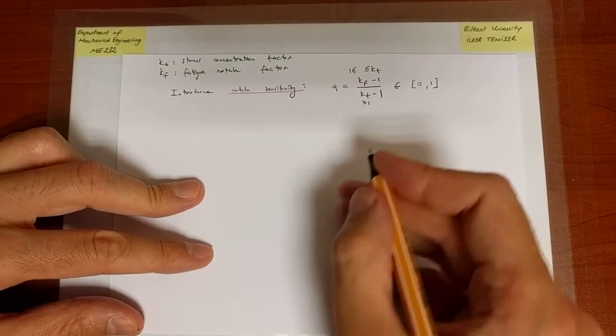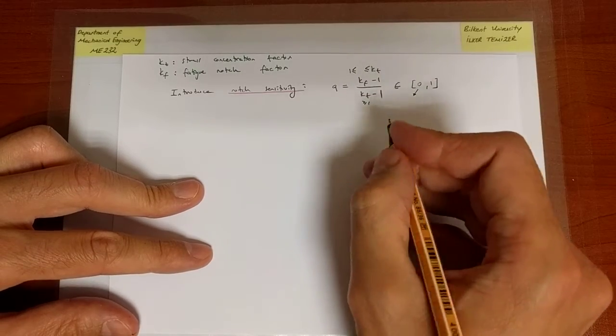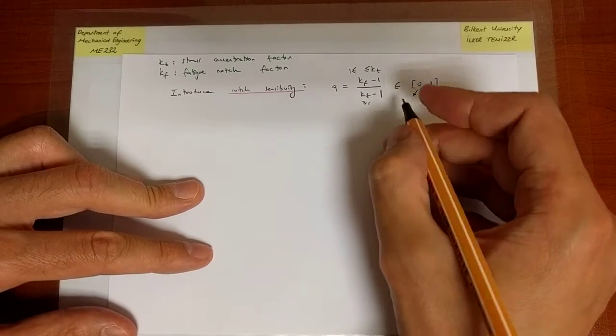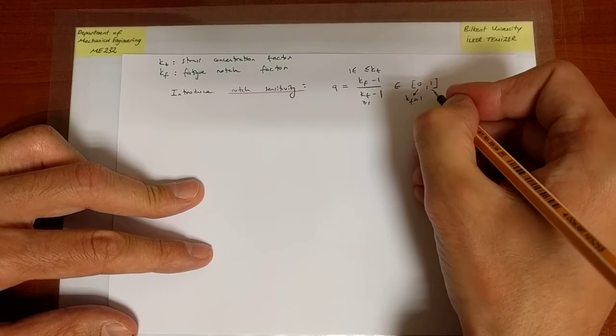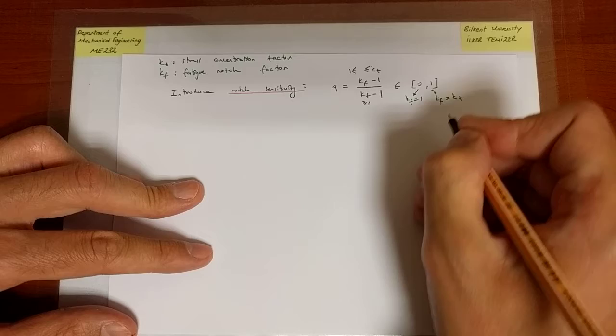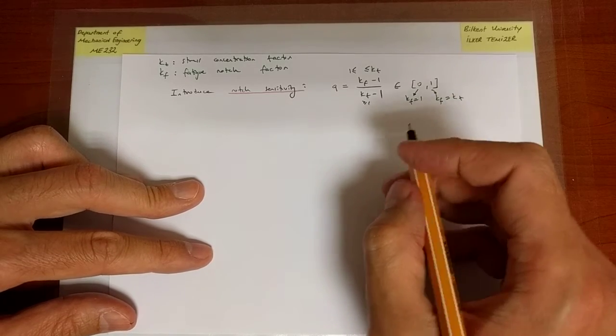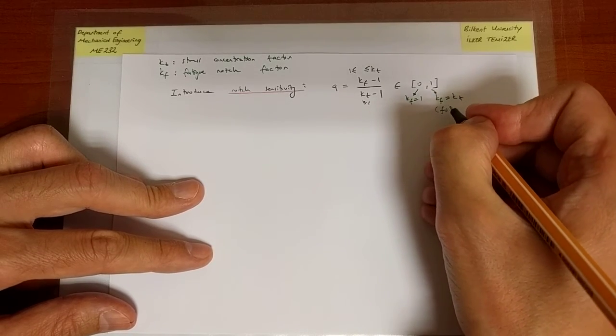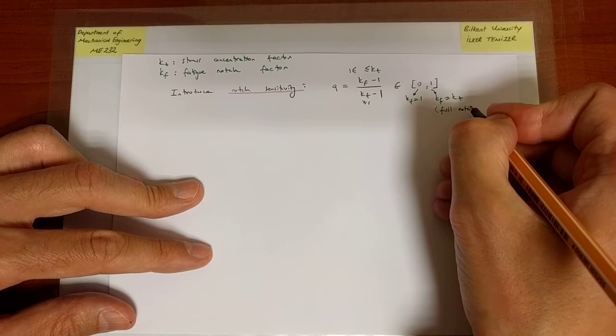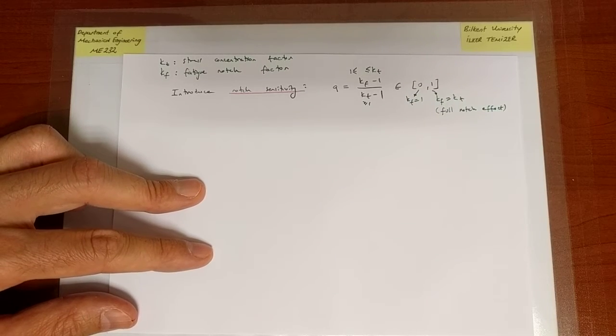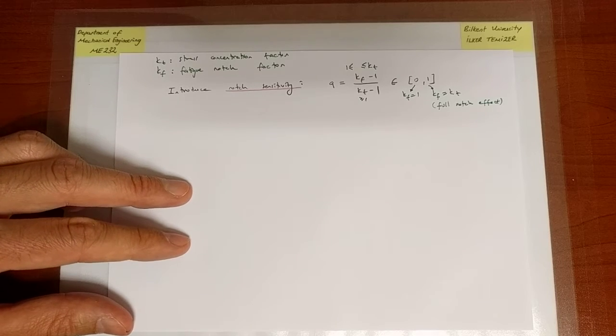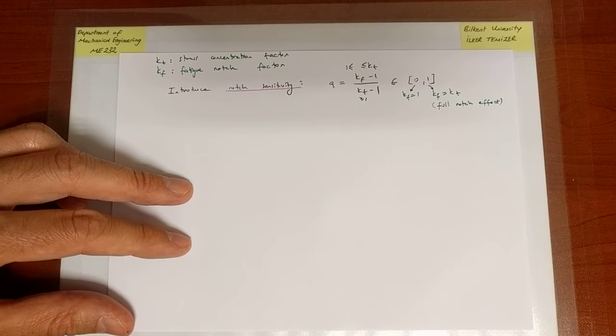Here, the range: the lower limit is where KF is equal to 1, and this one is KF is equal to KT. When KF is equal to KT, we have the full effect of the notch on fatigue, because the effect of the notch is reflected completely through the whole value of KT.